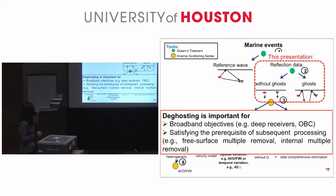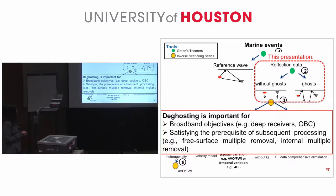The second reason is, as you have already seen in this processing tree, we need this deghosted data, which can provide the satisfactory prerequisites for subsequent processing steps. For example, free surface multiple removal and internal multiple removal.